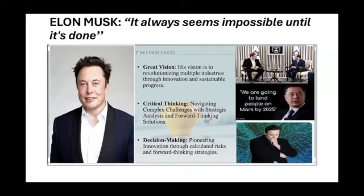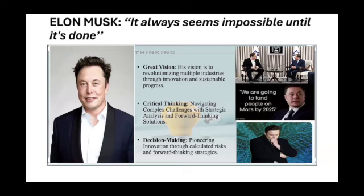Elon Musk's critical thinking is evident in his reusable space rocket. In the past, rockets that visited space would be grounded for a whole year of renovation before flying again, but Musk's thinking produced a reusable rocket able to visit space multiple times without delays. He also developed Tesla electric vehicles, which reduce the effect of carbon pollution on the ozone layer, thereby improving the environment.